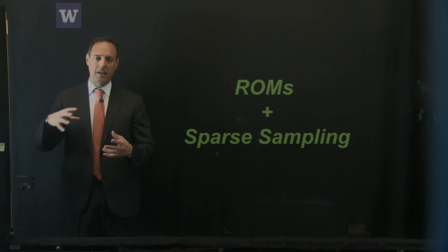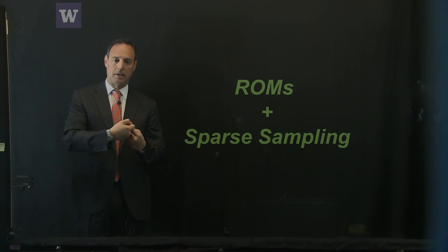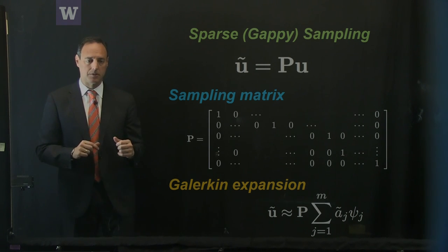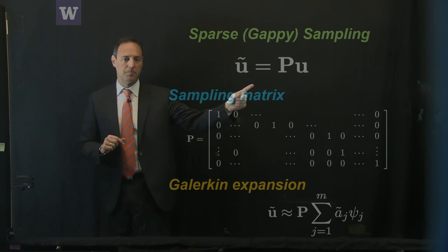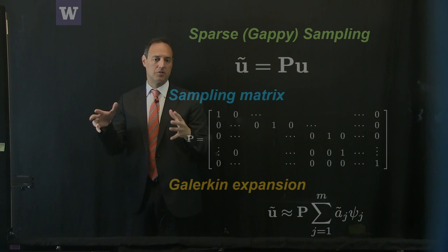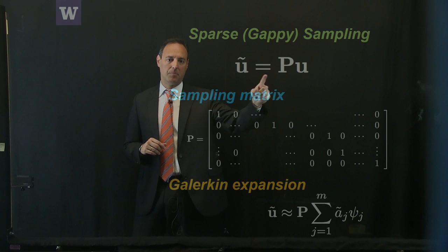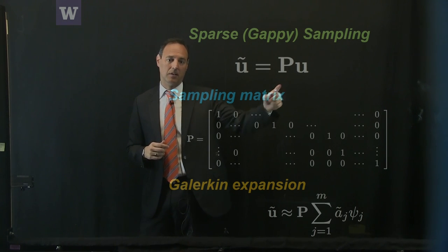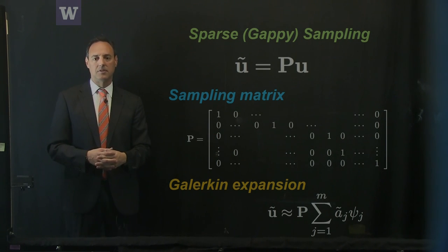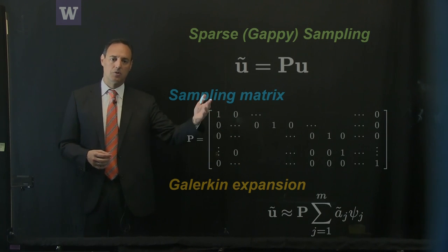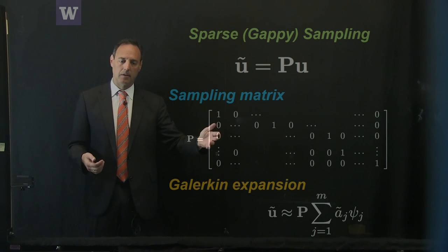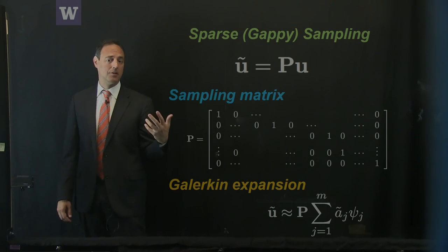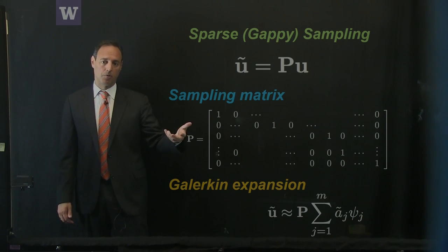The whole point is to integrate sparse sampling with reduced order modeling. We have a new innovation around how to improve sampling locations. I introduce the matrix P, which tells me how to sparsely sample the dynamics. The full state U is multiplied by P to get a reduced vector U-tilde — a small sample of the large high-dimensional space. P consists of rows of an identity matrix indicating exactly where to sample, with ones meaning sample and zeros meaning don't. This P matrix uses a small number of samples to reconstruct full dynamics and perform nonlinear interpolation for the reduced basis.